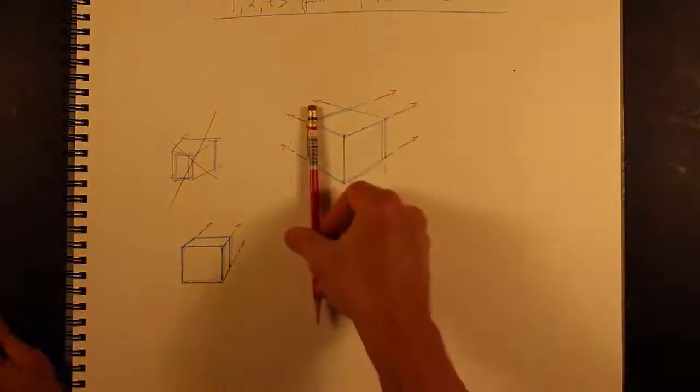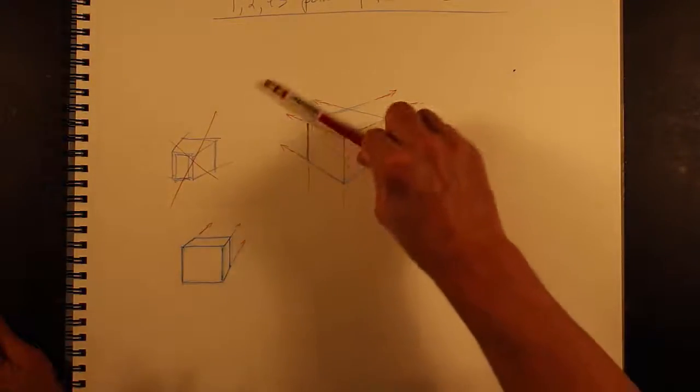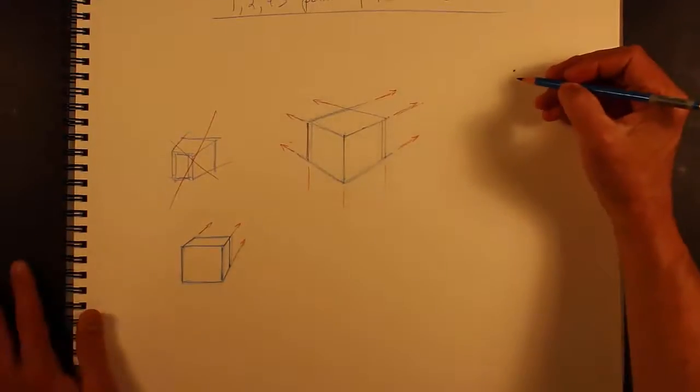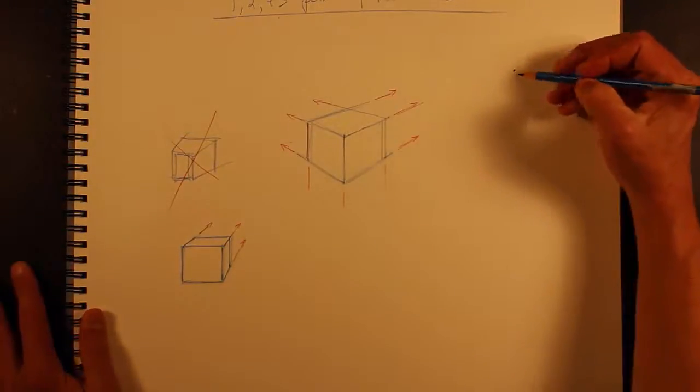Okay, so for the two-point, verticals are parallel, and these converge. For the three-point, nothing is implicitly parallel.